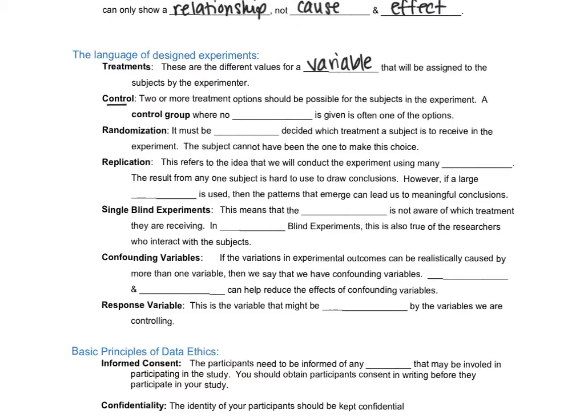A control group is when two or more treatment options should be possible. And the control group is the one where there's no treatment. So most of us probably have heard of a placebo. That's the no treatment group. Randomization just means things need to be randomly decided. We need to randomly decide which treatment a subject is to receive in the experiment. The subjects can't make that choice because we could say maybe there's some sort of relationship between why they're making this choice. So it needs to be random. That's one of the most important things in this entire class. Random. We'll hear that a lot.